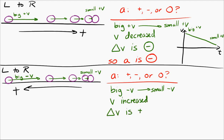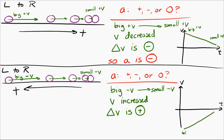If you don't see that, try drawing a graph of velocity versus time: it went from a big negative velocity to a small negative velocity, so the change was positive. If the change in velocity is positive, then the acceleration is also positive.